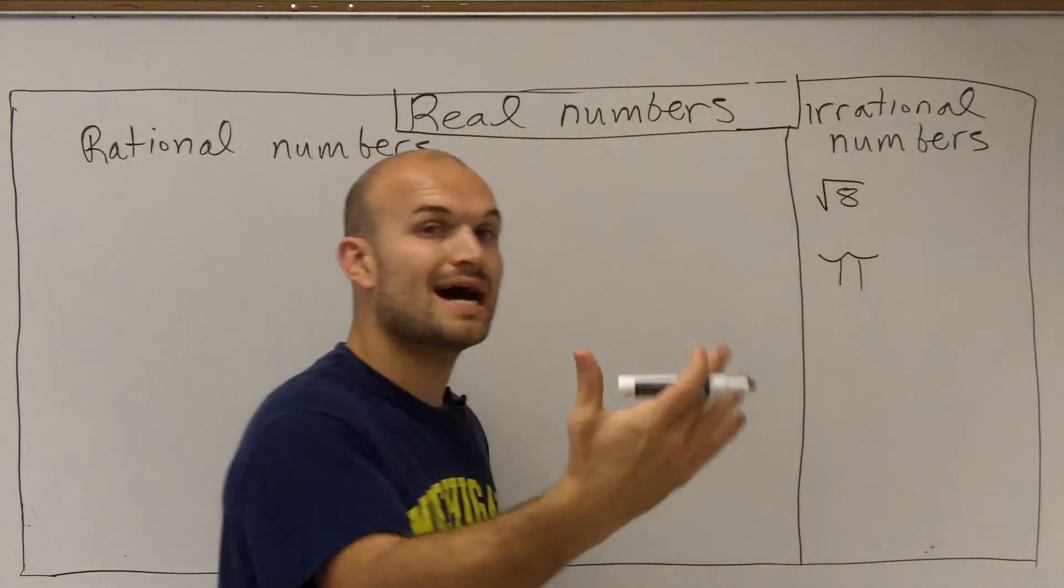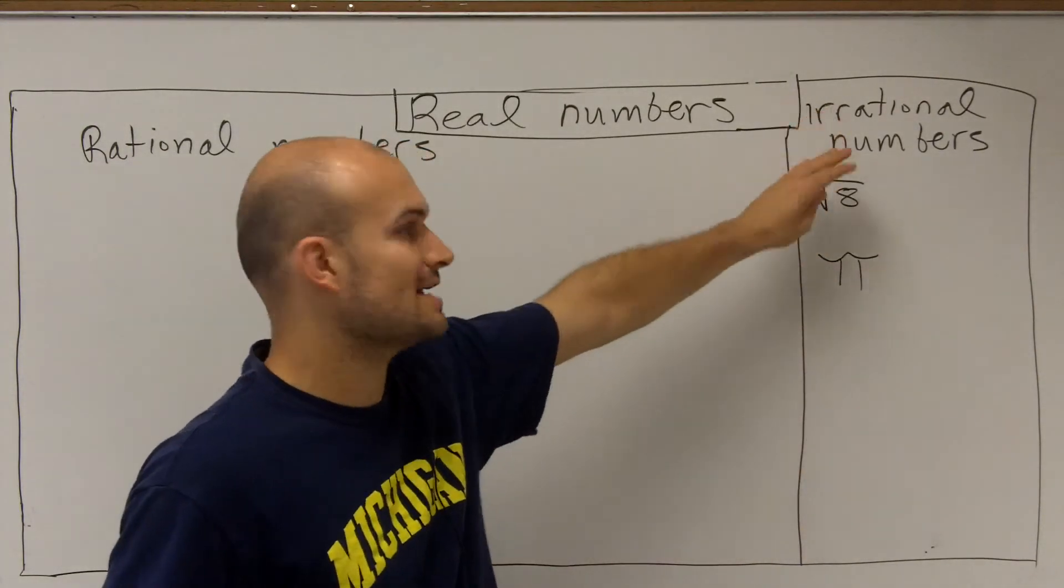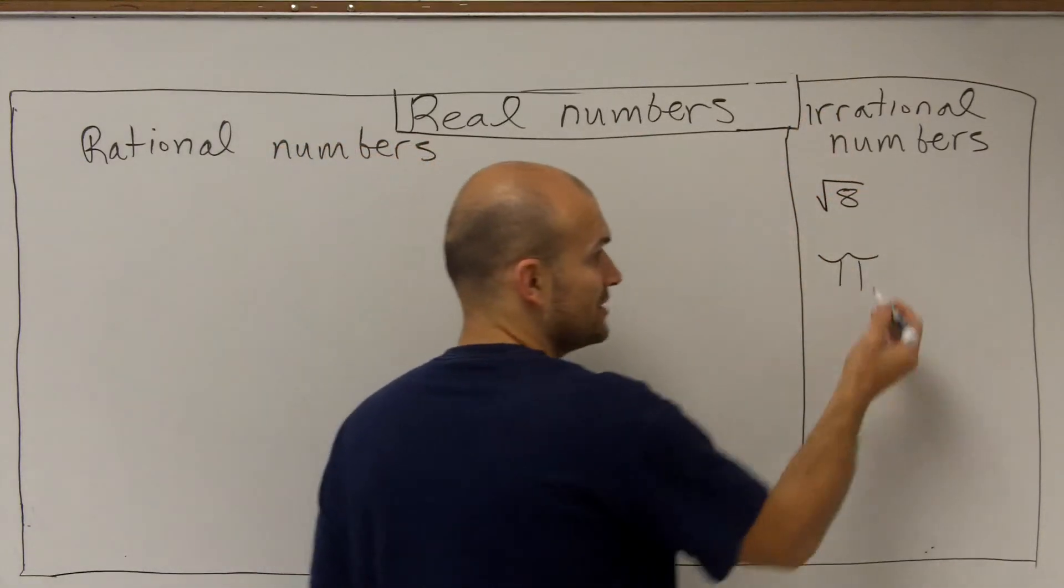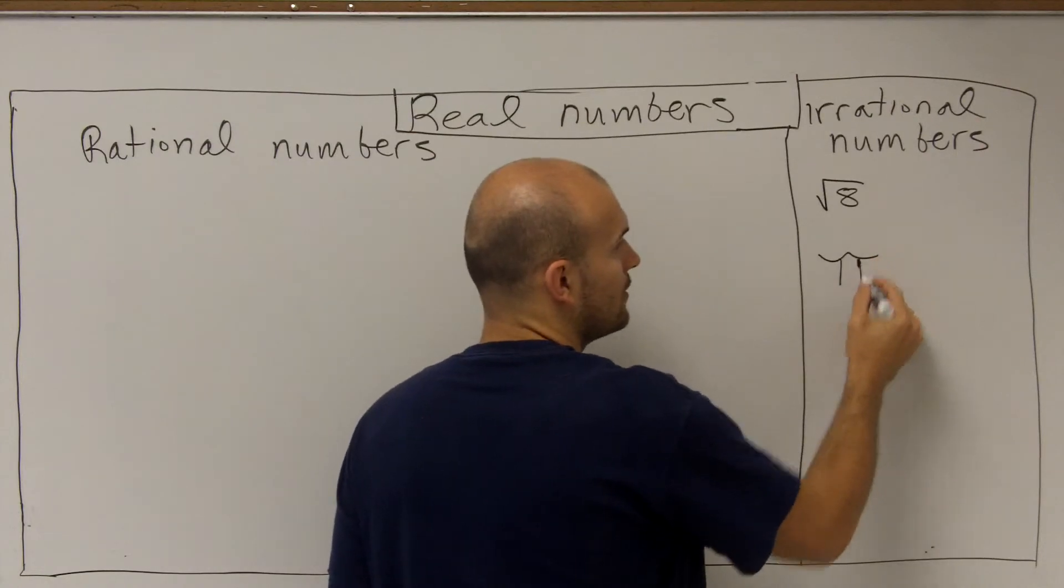So we know that pi goes on and on forever. Therefore, it's an irrational number, as we cannot write it as a fraction to write in as a whole number.